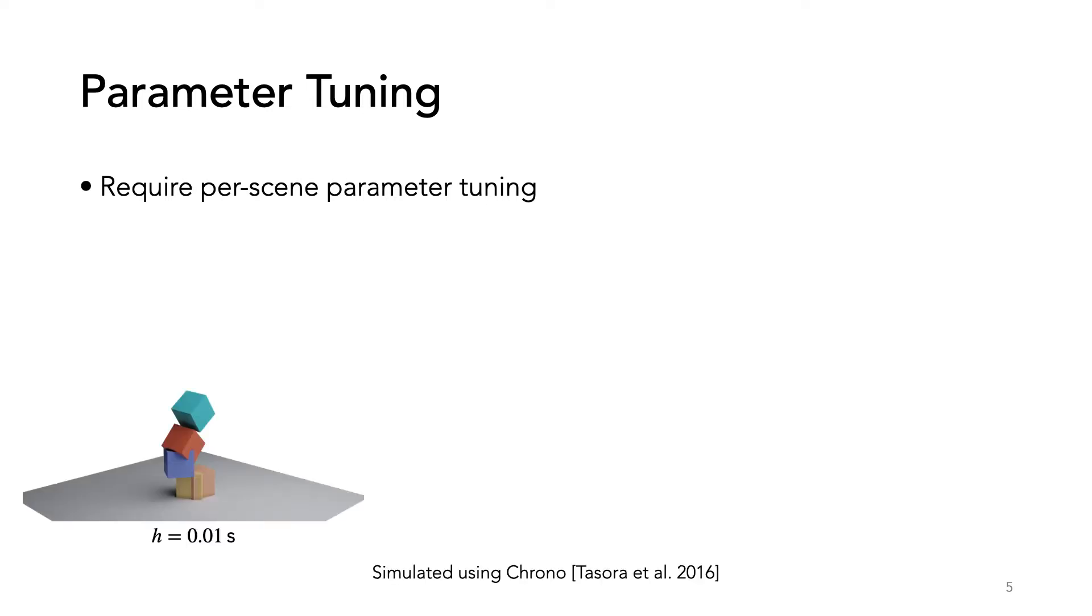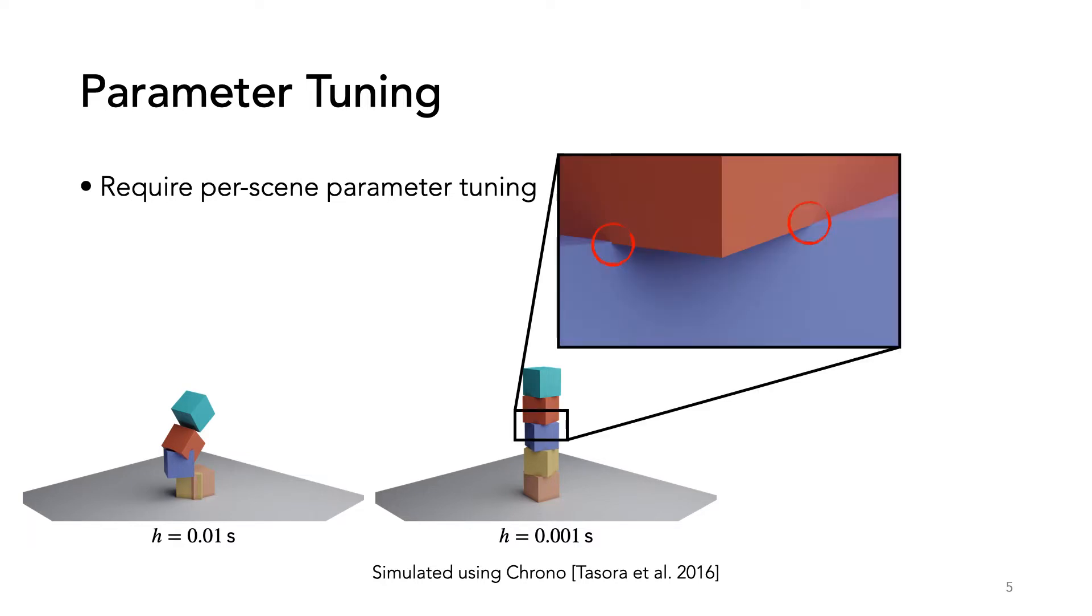For example, we tried to stack five cubes in the Chrono physics engine using a large time-step, but this results in large intersections. Maybe we can fix this by reducing the time-step. The stack looks better, but if we look closely, we still have intersections. Finally, with an even smaller time-step, we can avoid these intersections.